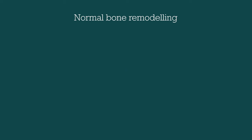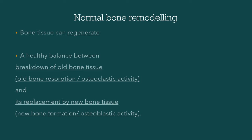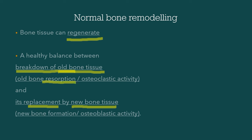To understand this, we need to know how normal bone remodeling occurs in healthy individuals. A person's bone tissue is capable of regenerating — the old bone tissue breaks down and new bone tissue replaces it. The body carefully balances this process, and this is called remodeling of the bone, which helps maintain the health of the skeleton. The breakdown of old bone tissue is called bone resorption, which is performed by osteoclastic bone cells, also called osteoclastic activity.